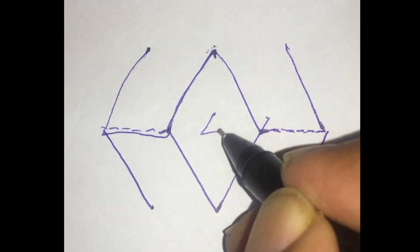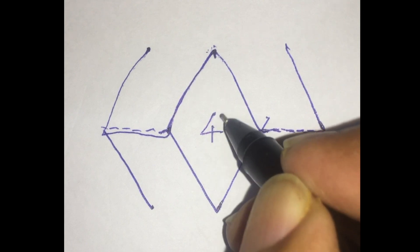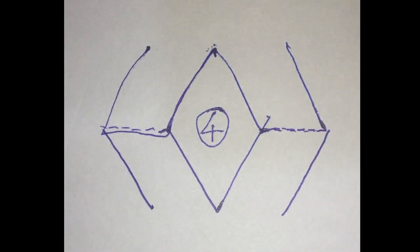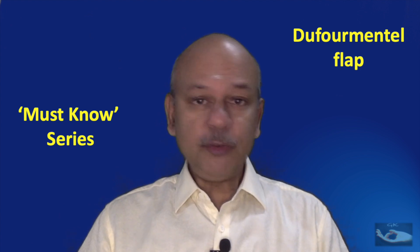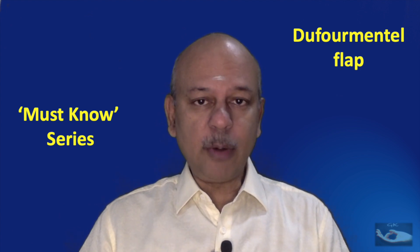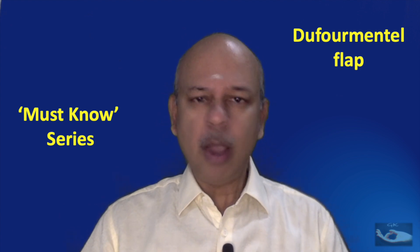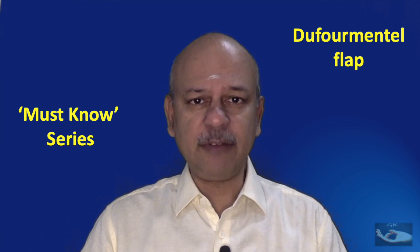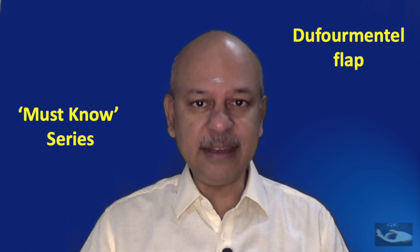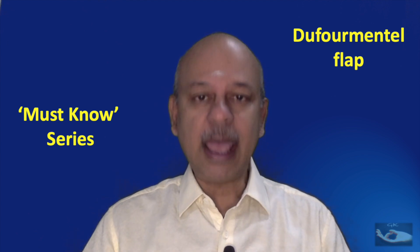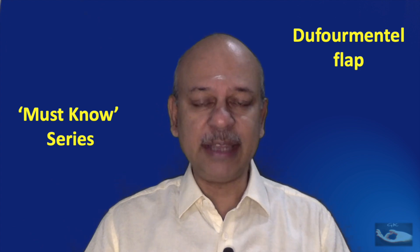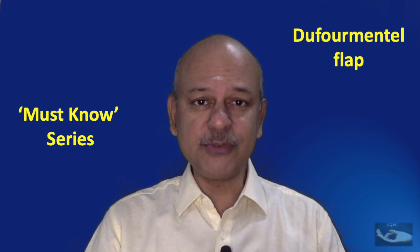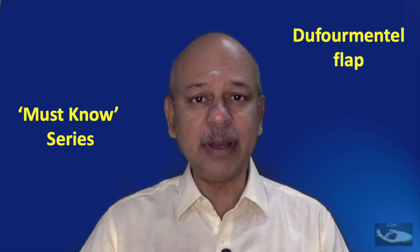Thus, four Limburg flaps are possible for each rhomboid defect. We also need to know about the deformmental flap — how it differs from the rhomboid flap, when it is indicated, and what the ultimate suture line looks like after the deformmental flap as opposed to the Limburg flap.